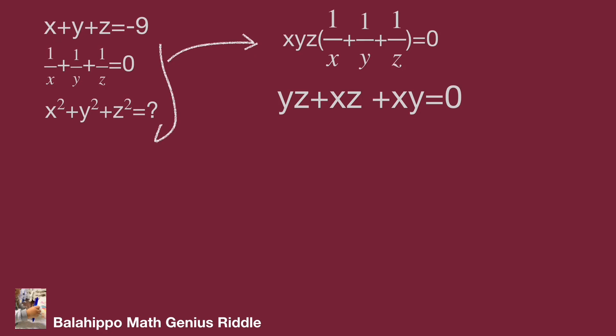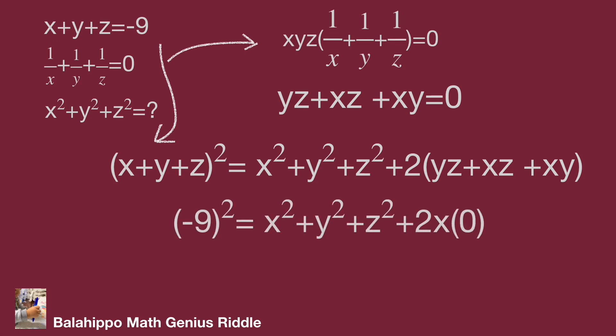After that, square the equation x plus y plus z. We get quantity x plus y plus z squared equals x squared plus y squared plus z squared plus two times quantity yz plus xz plus xy. Substitute x plus y plus z by minus nine and yz plus xz plus xy by zero, we get 81 equal to x squared plus y squared plus z squared.